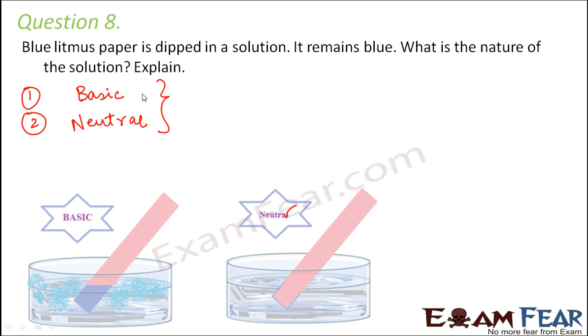Now how do we decide whether it is basic or neutral? So for that purpose what do we do? We use a red litmus paper to test it. Now when you use a red litmus paper, if it is a basic solution it will become blue but if it is really neutral then it will still remain red and that's how we can decide whether it is basic or it is neutral.